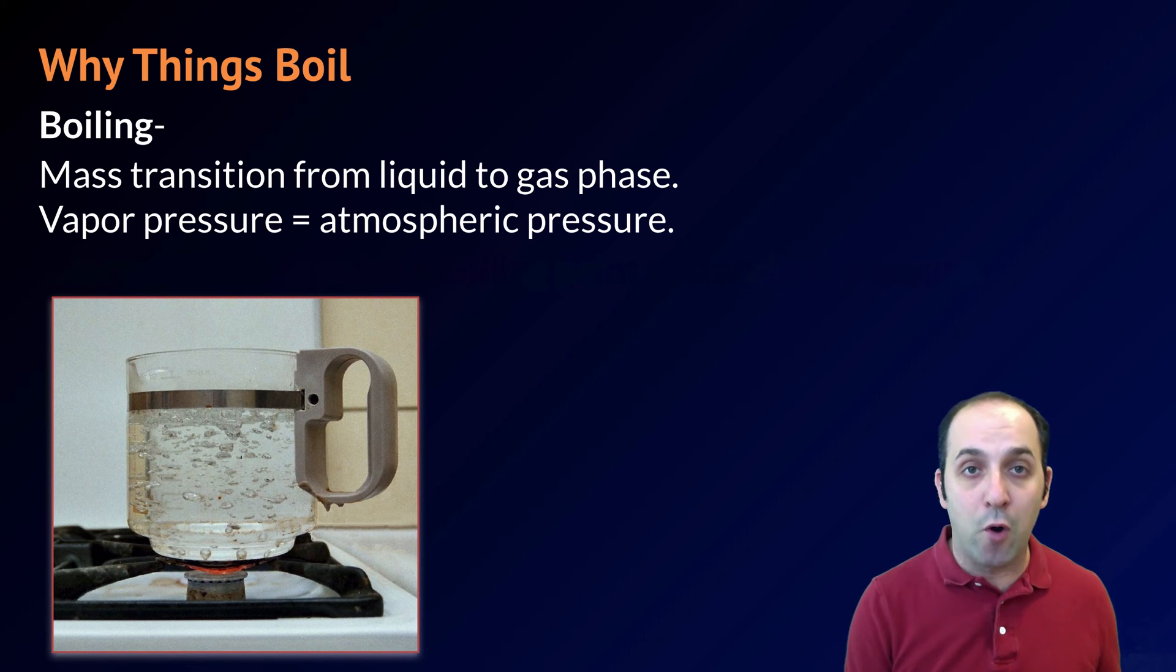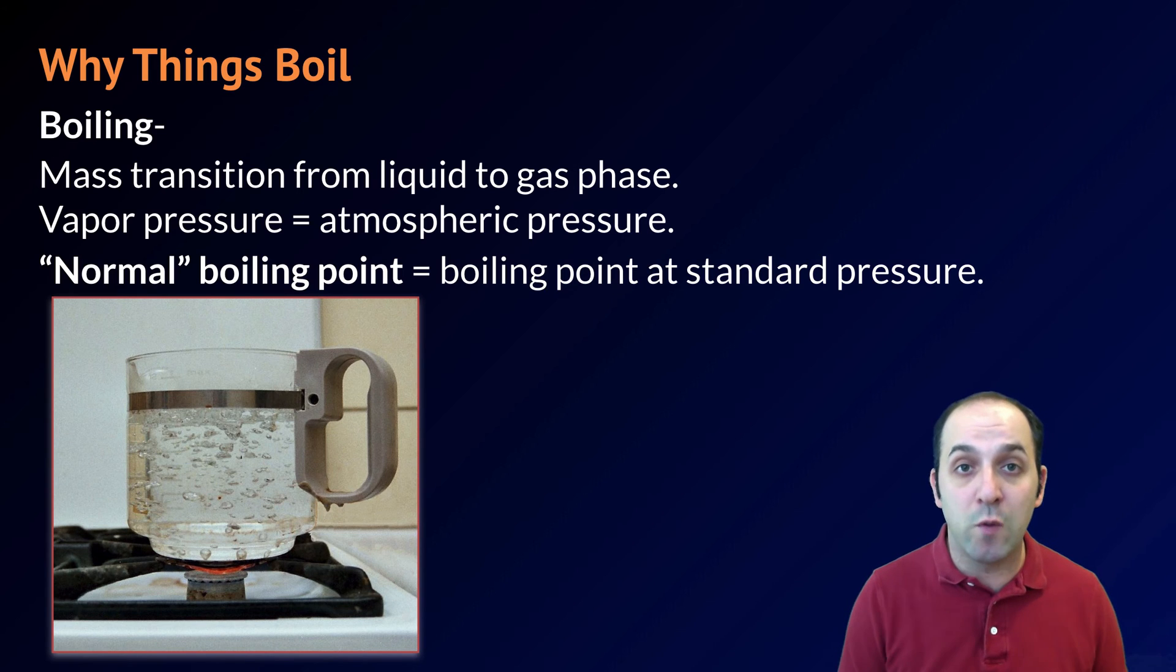This is what we'd call the normal boiling point, which is the temperature at which the substance boils at standard pressure, one atmosphere or 101.3 kilopascals. The other way that we could boil a liquid is simply to lower the atmospheric pressure until that pressure is equal to the liquid's vapor pressure at whatever temperature we happen to be at.